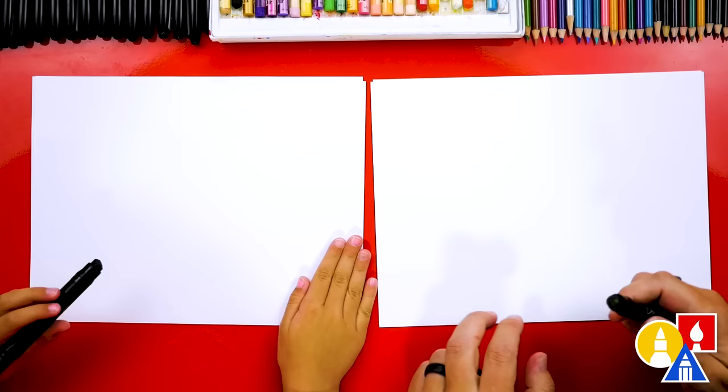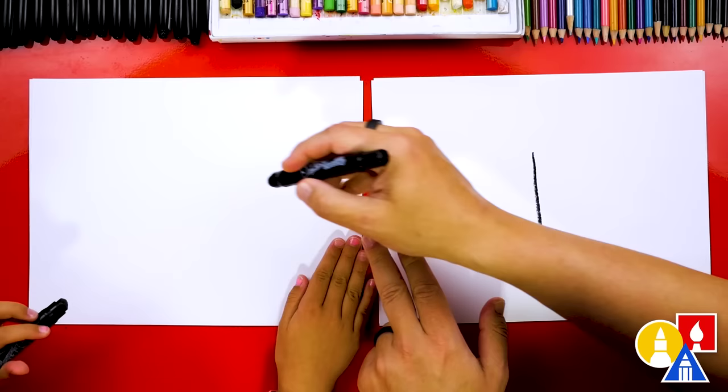Let's have our paper this way to draw the letter B first. We're going to draw a line straight down first, right in the middle of our paper. So you can start here and draw it straight down.